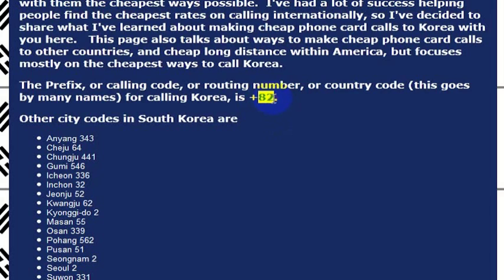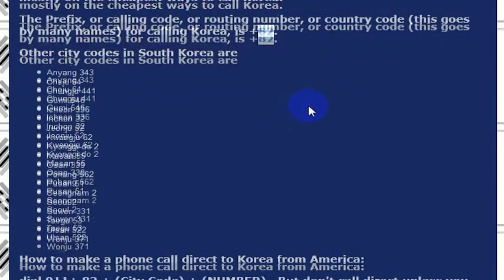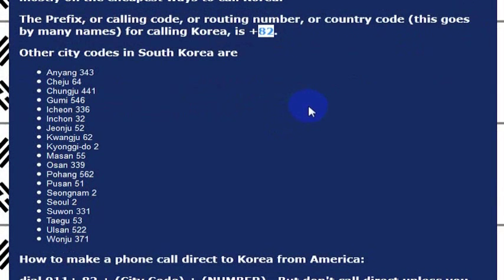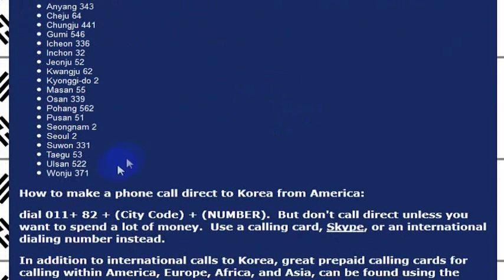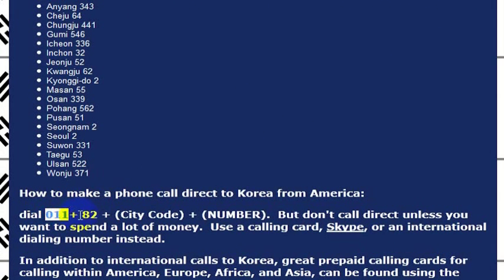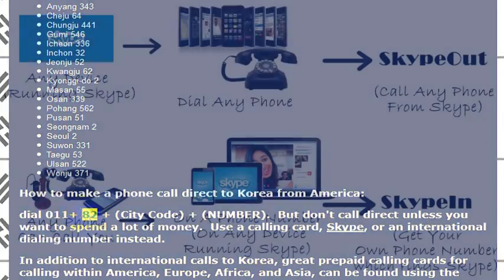The country code for Korea is 82. So if you want to reach a city in Korea, what you need to do first is dial an outbound international phone call from the United States. You would dial 011 from any internationally enabled landline phone, and then 82 to call Korea. 82 is the Korea country code.